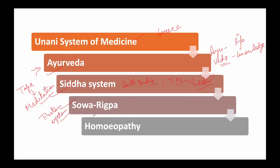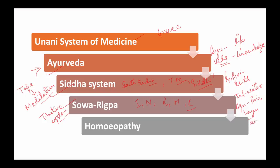Next is Swarikpa, commonly known as the Tibetan system of medicine. It is one of the oldest living and well-documented medical traditions of the world, originated in Tibet and popularly practiced in India, Nepal, Bhutan, Mongolia, and Russia. The majority of Swarikpa theory and practice is very similar to Ayurveda. Swarikpa is based on the principle that bodies of all living and non-living beings are composed of five cosmo-physical elements. It was recognized by the Government of India in 2011.